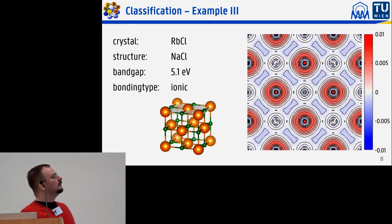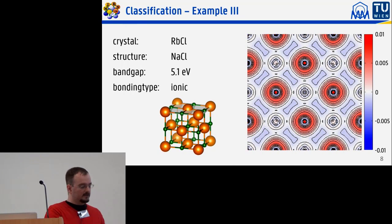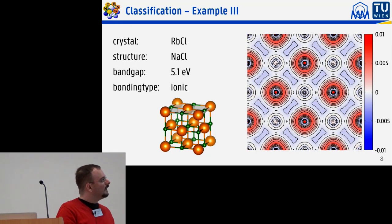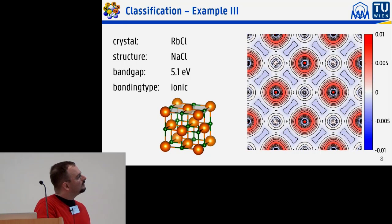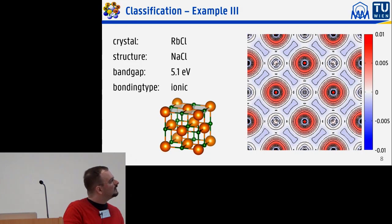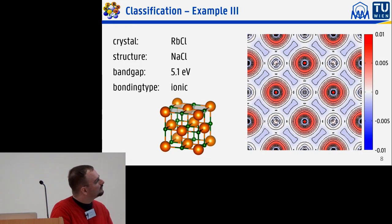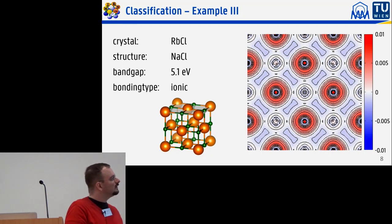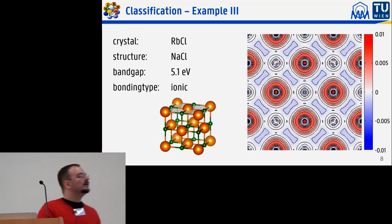For the ionic example I chose rubidium chloride in the sodium chloride structure, where you can see large electron accumulation around the chlorine atoms, depletion around the rubidium atoms, and almost no change in the interstitial — making it clearly ionic.